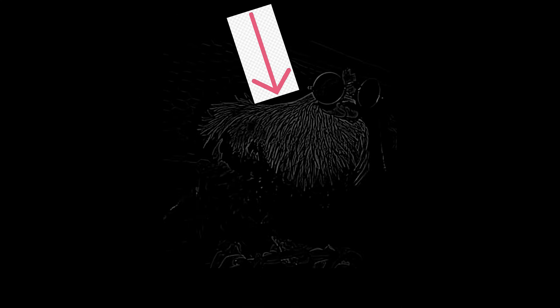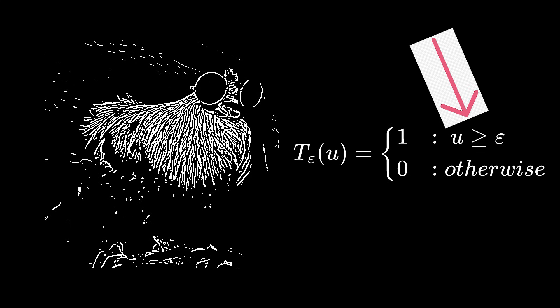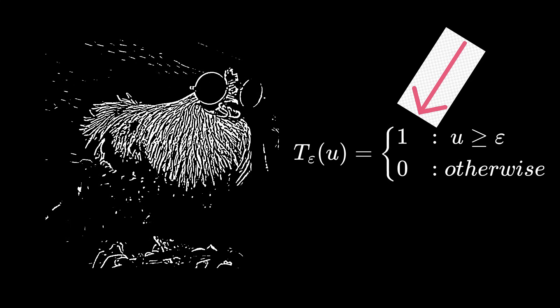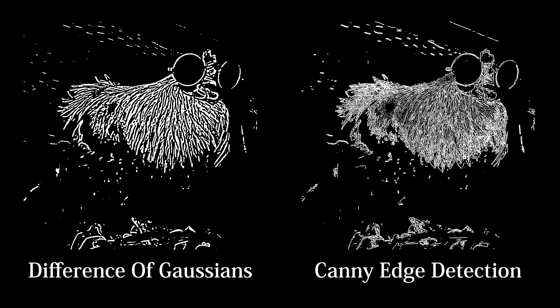We can further accentuate and solidify these lines by applying a threshold to the output, where anything greater than the threshold is white and everything else is black. This operator is known as the difference of Gaussians, and when compared to canny edge detection, we see that we get a similar output but debatably more pleasing visuals, such as varying line width.